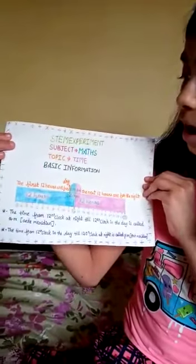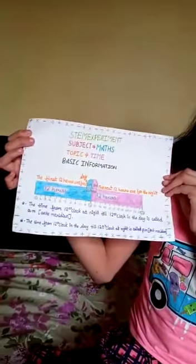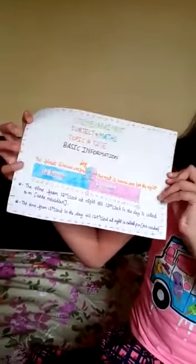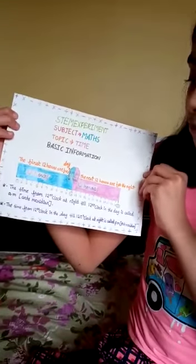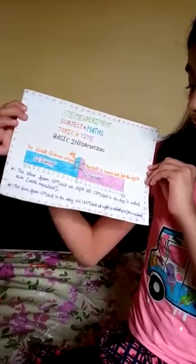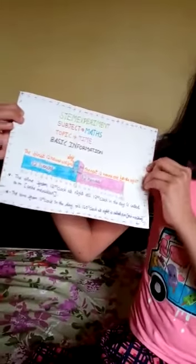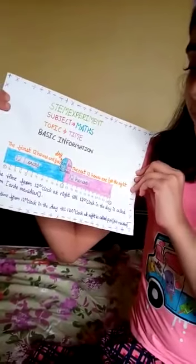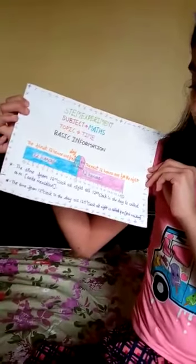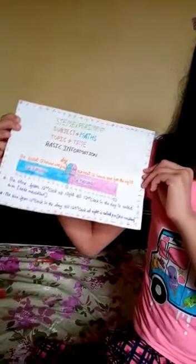The first 12 hours are for the day. The next 12 hours are for the night. AM and PM. The time from 12 o'clock at night till 12 o'clock in the day is called AM, anti-meridian. AM is the short form. The time from 12 o'clock in the day till 12 o'clock at night is called PM, post-meridian. PM is the short form.